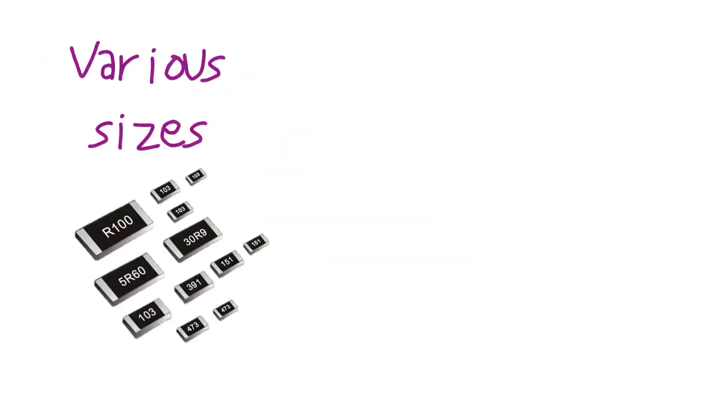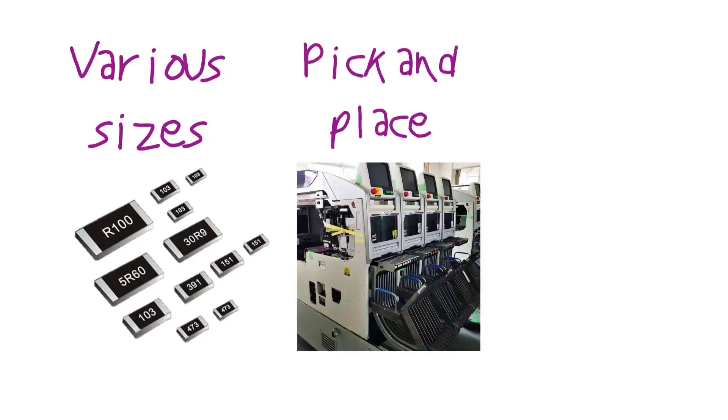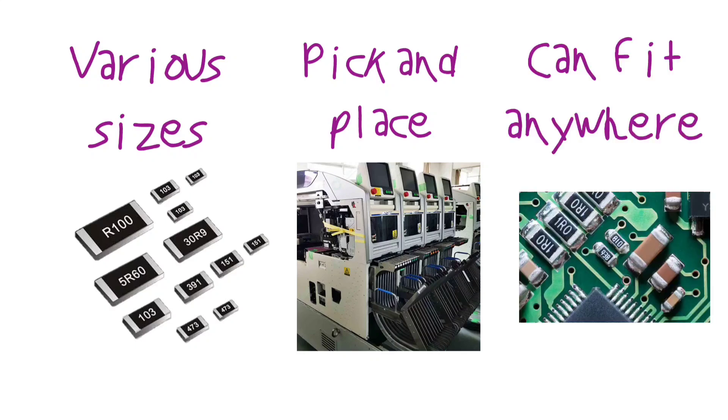The first one, and more obvious, is to make a jumper in a standard form factor. They can be placed with pick and place machines, and with the various size packages they can fit anywhere.